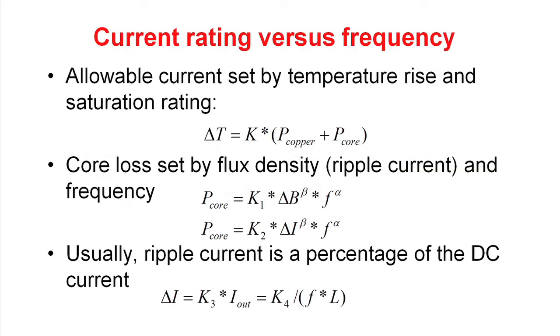Here are a number of equations that tell you the characteristics of an inductor. As in all magnetics, the size of the inductor is set by the temperature rise normally and then maybe by the saturation rating of the core material. We can calculate the temperature rise of the inductor as some constant times the sum of the copper loss and the core loss. And the core loss is set by the flux density in the inductor and the operating frequency.